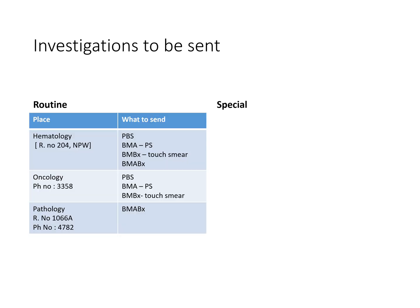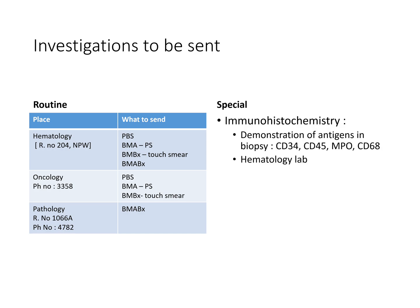Routine investigations to be sent include a peripheral blood smear of the patient, smear of the bone marrow aspirate, touch smear of the bone marrow biopsy, and bone marrow biopsy tissue. All of these must be sent to the hematology lab, located at room number 204 in the new private ward. Peripheral blood smear, aspirate smear, and bone marrow biopsy touch smear must also be sent to the med-oncology lab. Bone marrow biopsy tissue must be sent to the pathology lab in first ward, room number 1066A. Special investigations include immunohistochemistry to demonstrate antigens in biopsy, such as CD34, CD45, myeloperoxidase, and CD68, sent to the hematology lab.